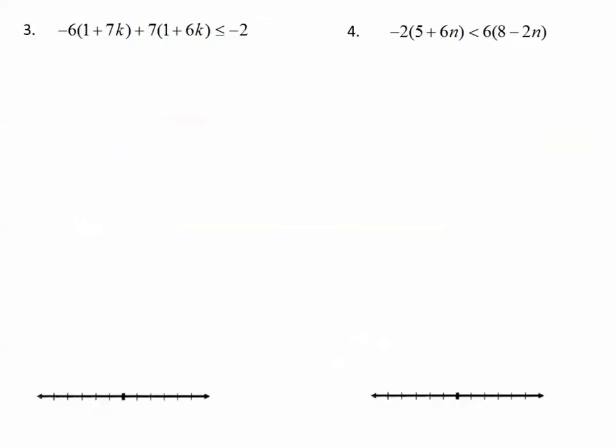Number 3. Negative 6 times the quantity 1 plus 7k plus 7 times the quantity 1 plus 6k is less than or equal to negative 2. Similarly to how we did the other one, we can distribute this negative 6 and we can distribute this positive 7 first. Negative 6 times 1 is negative 6, negative 6 times 7k, negative 42k, plus 7 times 1 is 7, and 7 times 6k is positive 42k. Less than or equal to negative 2.